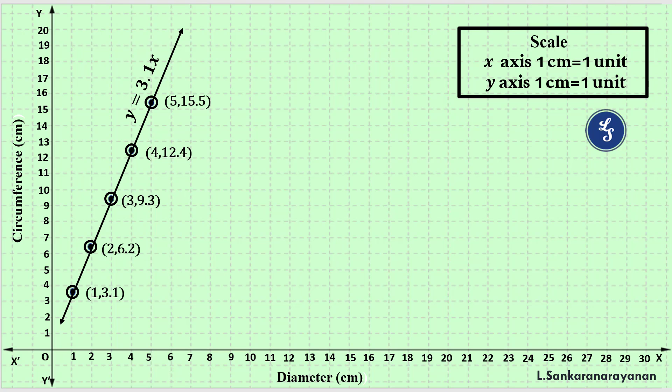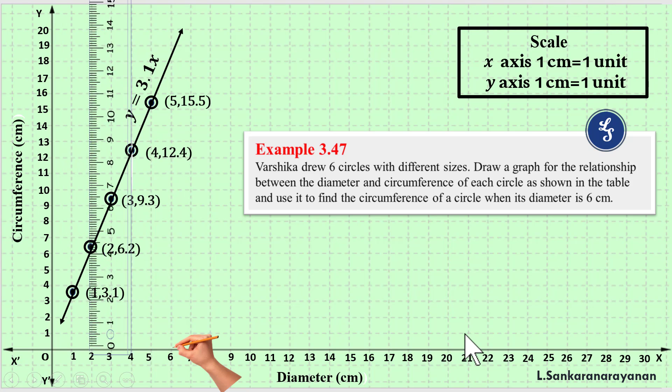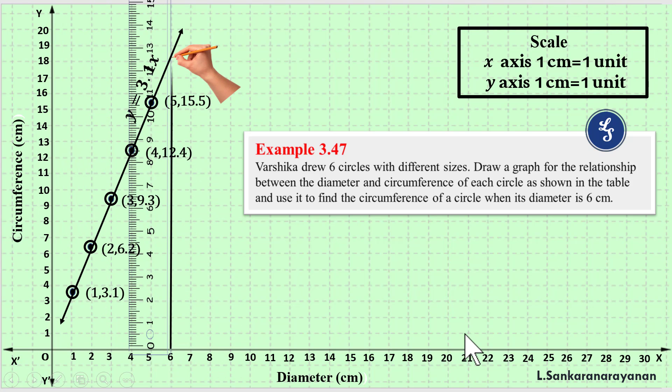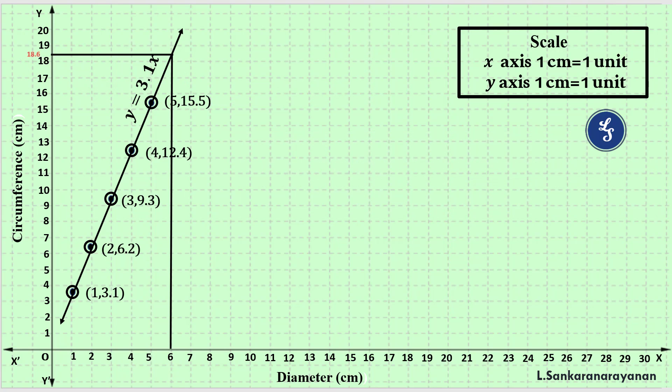Next, what is the question asked? Let us see the question once again: use it to find the circumference of a circle when its diameter is 6 centimeter. Where is diameter? In x-axis. So we place our scale just near the point x equals 6 and you draw a line. Now this line meets the line y equal to 3.1x in a point. From that point, you draw another line horizontally. It meets somewhere in y-axis and that point is 18.6. So that is the required answer.